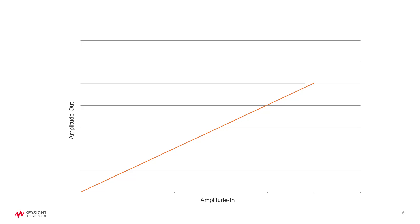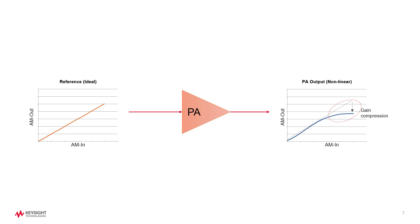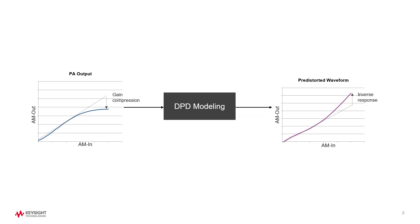When a PA is perfectly linear, you can expect a constant gain across all power ranges all the way to the top. If we plot an XY graph with input and output power, the slope represents PA gain, and the graph is a straight line. In reality, however, PA is a non-linear device. When the signal goes through the PA, the gain cannot sustain, especially in the higher power region. In the upper area of the graph, the line goes down compared to the straight line. This is called gain compression.